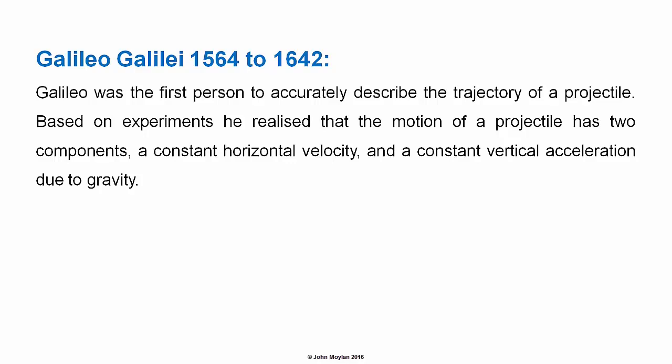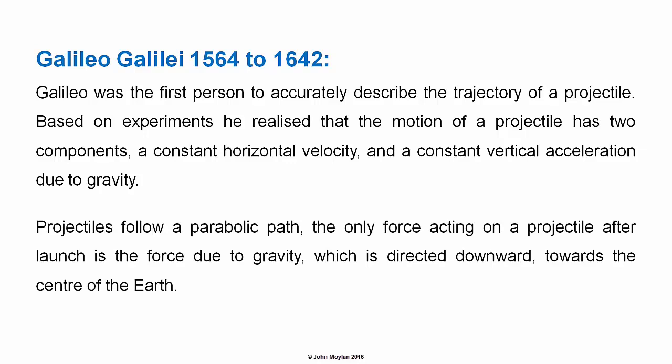Galileo Galilei, who lived from 1564 until 1642, was the first person to accurately describe the trajectory of a projectile. Based on experiments, he realized that the motion of a projectile has two components: a constant horizontal velocity and a constant vertical acceleration due to gravity. Projectiles follow a parabolic path.